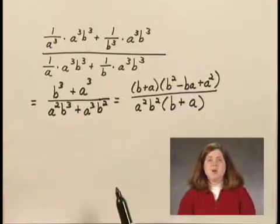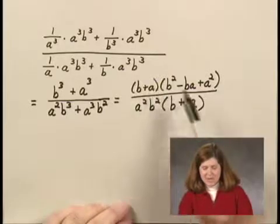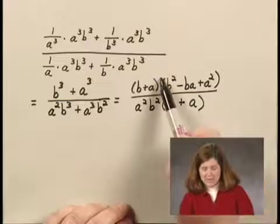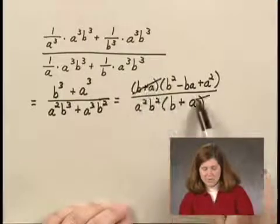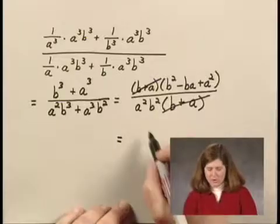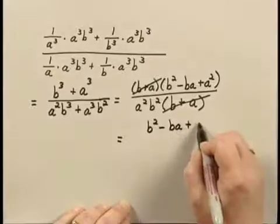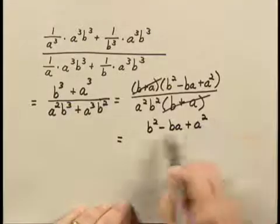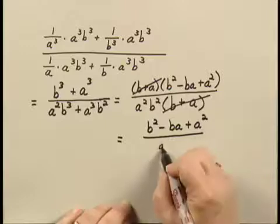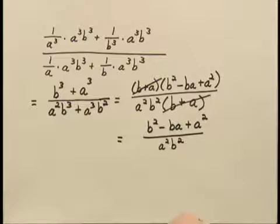Now that the numerator and denominator are factored, I see that I have common factors: b plus a in the numerator and b plus a in the denominator. I can cancel them — I remove a factor of 1 — and I write what's left in the numerator, which is b-squared minus b-a plus a-squared, which is not factorable, over what's left in the denominator, which is a-squared b-squared. And that's the simplified form of this expression.